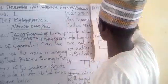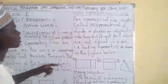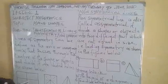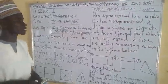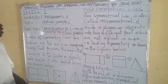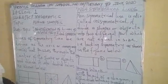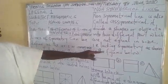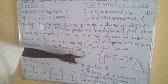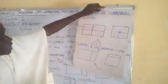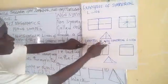The next topic is non-symmetrical lines. Non-symmetrical lines are also known as asymmetrical. They divide a shape or object into two different parts which are not equal in size — that is to say, they do not correspond to each other, lacking symmetry, as shown in the figure below. Now, examples of non-symmetrical lines.